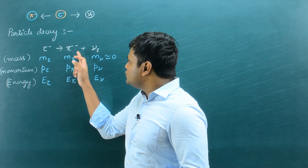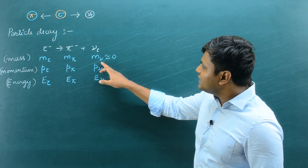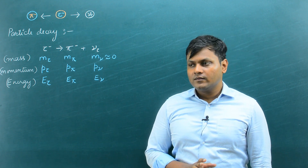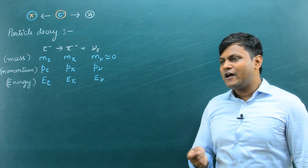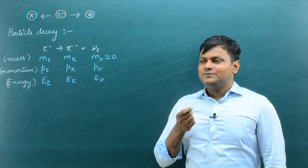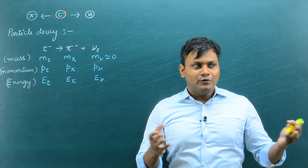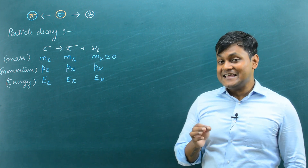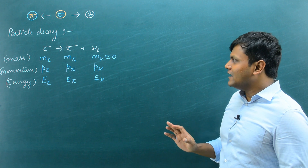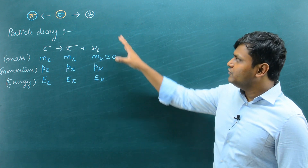A tau particle decays into a pi meson and a neutrino. In various questions, we consider the mass of a neutrino to be approximately equal to zero. It is not exactly equal to zero — neutrinos do seem to have some mass, but it is extremely negligible. In fact, it is so small that currently we don't even know what that mass is. At this point in our civilization we have not yet figured out the exact mass of a neutrino, but we know it is extremely minute and for calculations we approximate it to be zero.